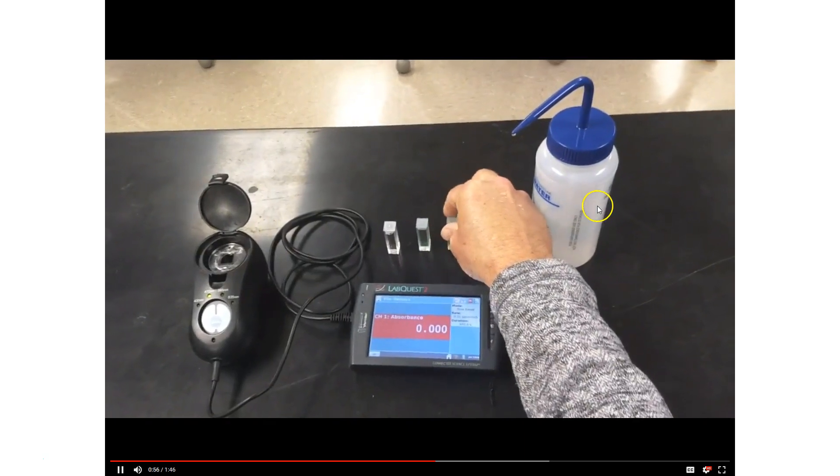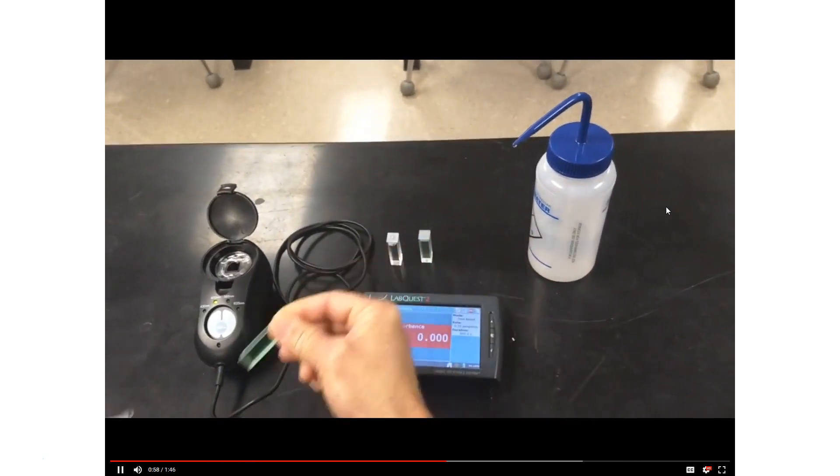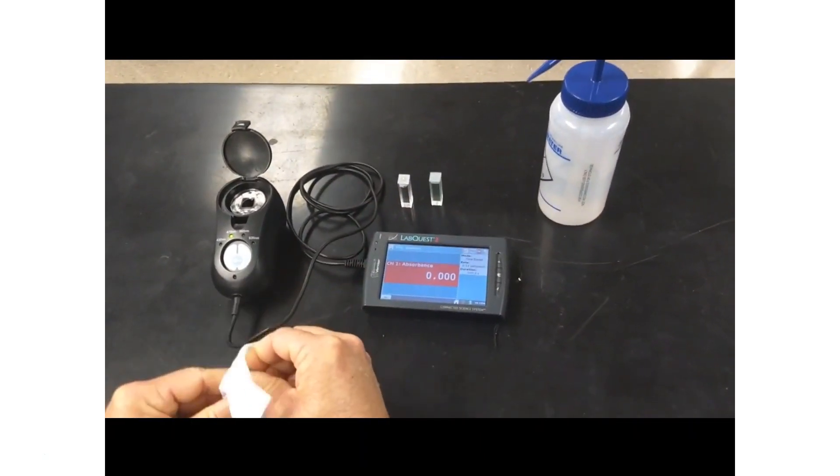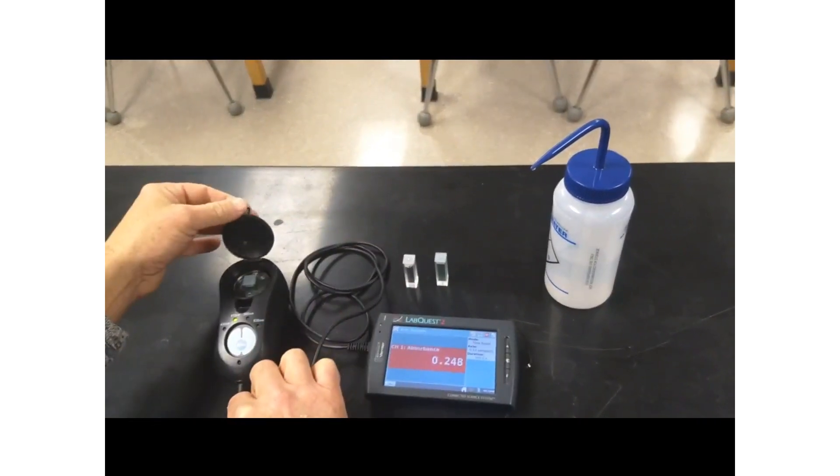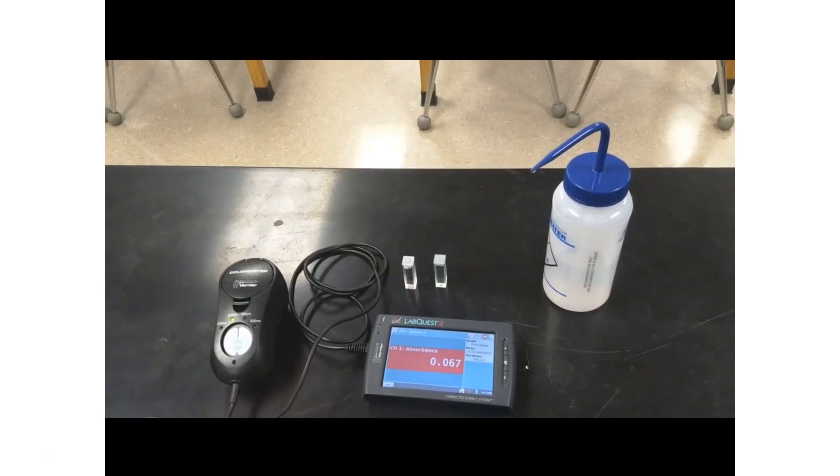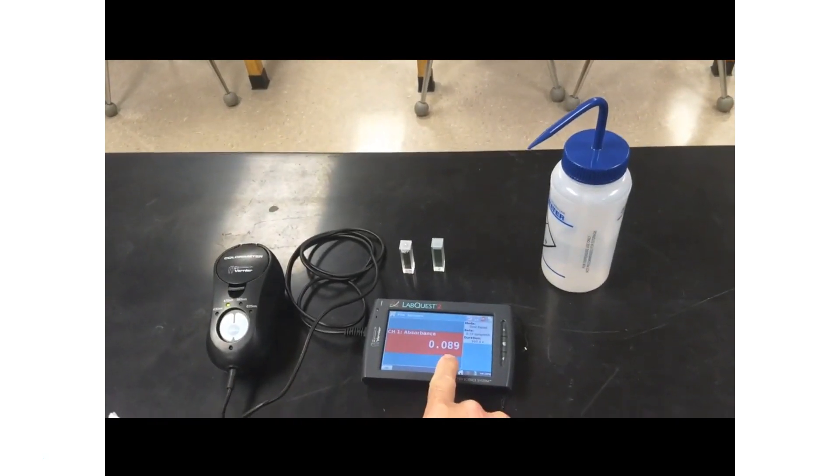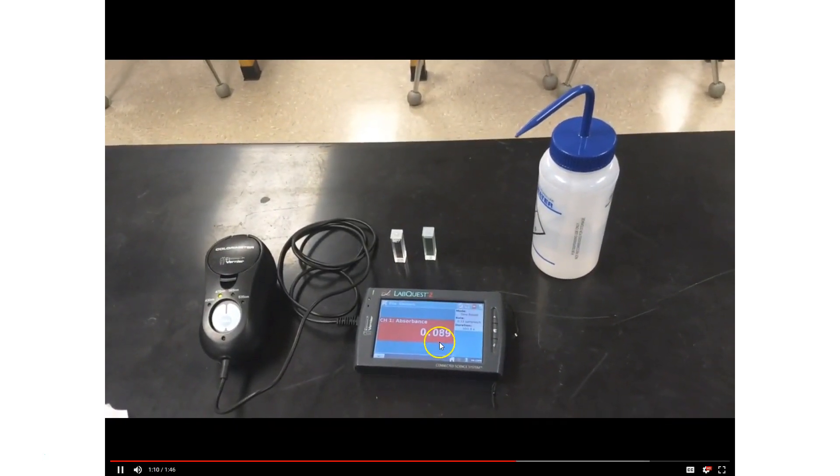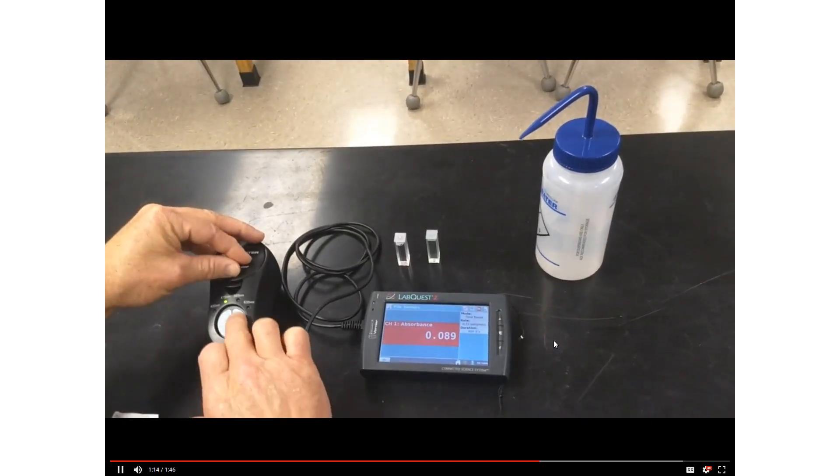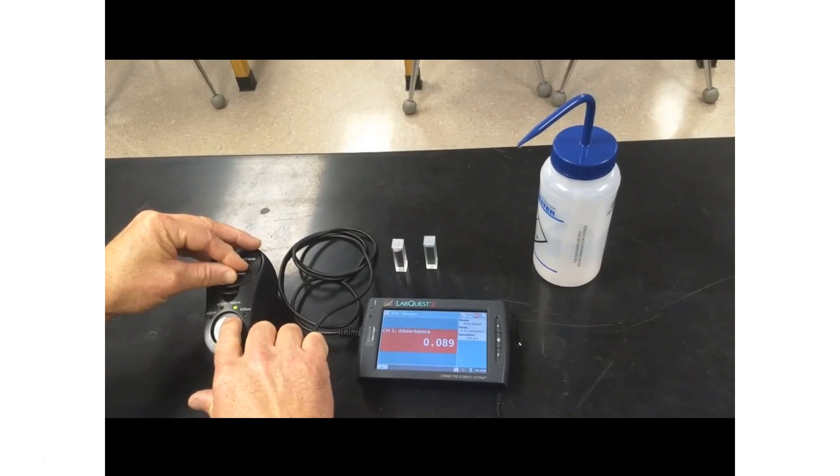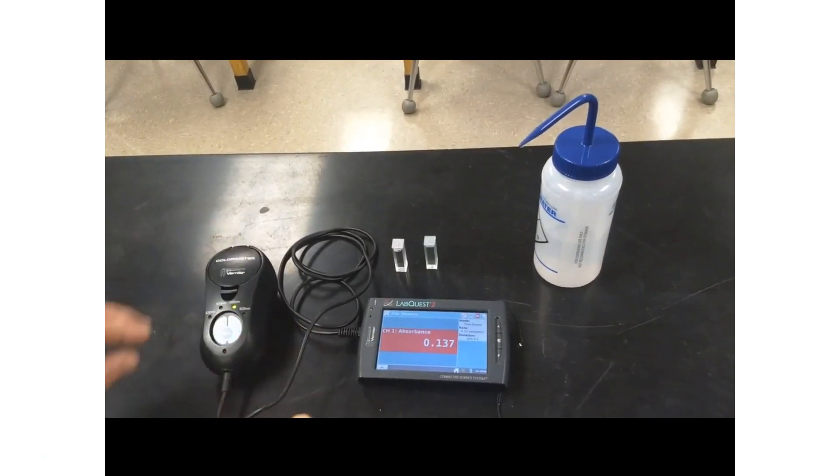Here's a sample of some green food coloring. You can see the color green. Place it into the colorimeter, close the lid, and it gives us an absorbance value. It's relatively low, so next we'll change the wavelength of light. We increase the wavelength to 470 nanometers,